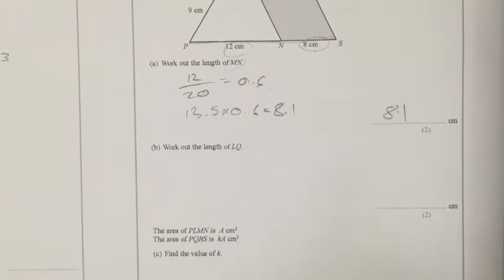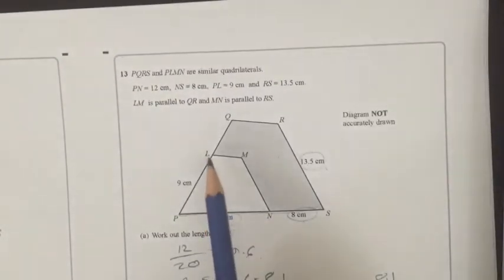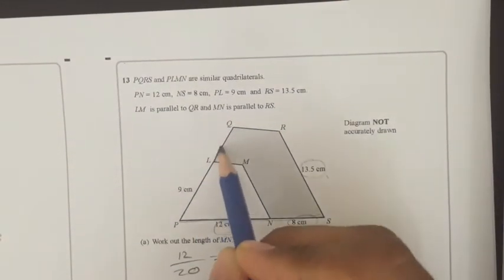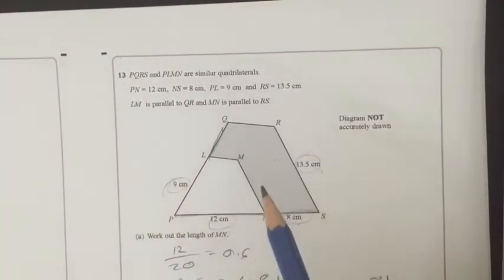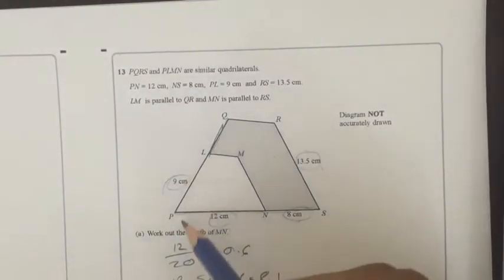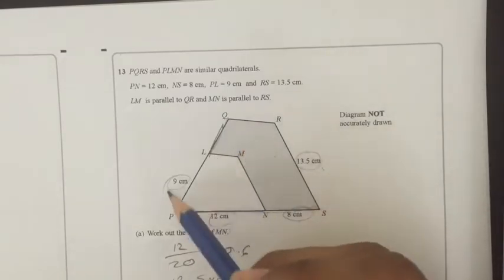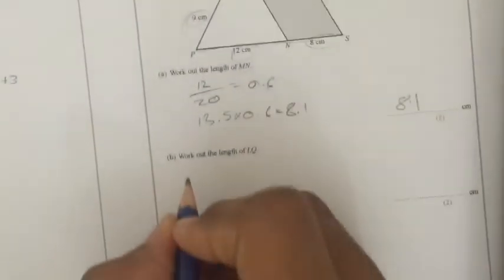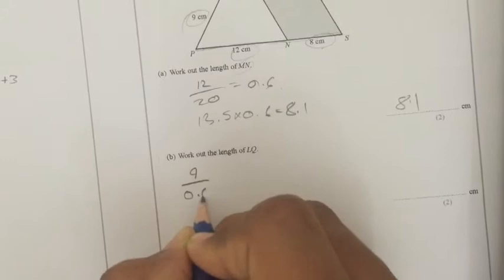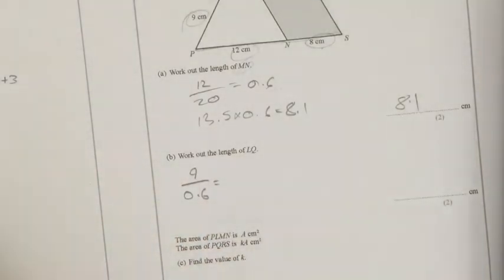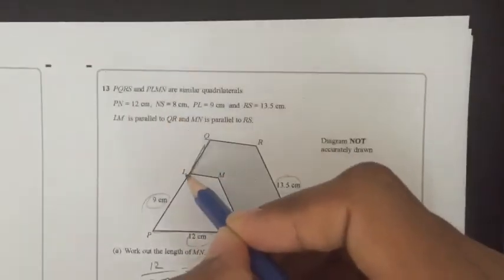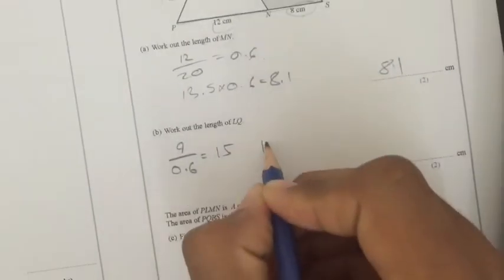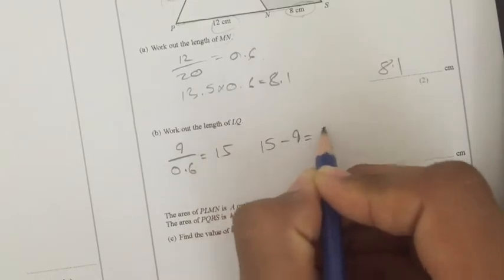Okay, answered our first question. So, second question. Work out the length of LQ. Now, LQ, we need this length. So we have the similar side, which is 9. And since it's the shorter side and we want the longer side, we have to divide 9 by 0.6. So 9 over 0.6 equals 15. Now, that's not our answer yet, since we only need LQ. So our answer would be 15 subtracted by 9, which will give us 6.